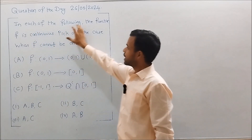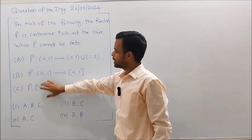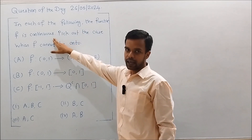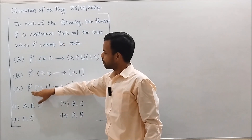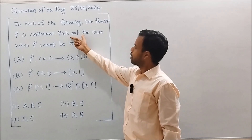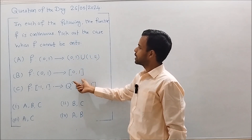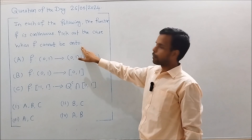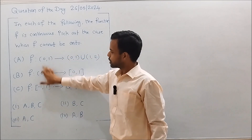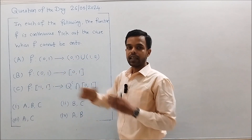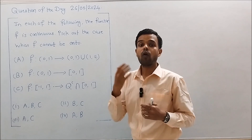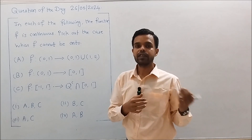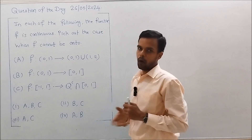It is given that in each of the following cases the function f is continuous. We have to pick those cases in which f cannot be an onto function — that is, cannot be a surjective function. These are the options.